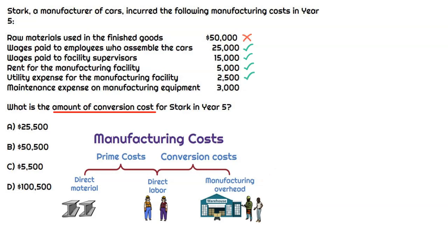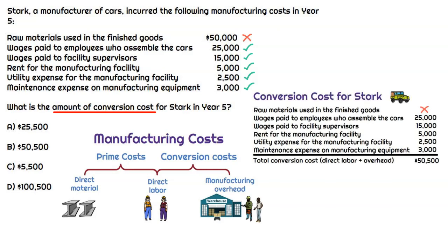The last cost is maintenance expense on the manufacturing equipment. We certainly have to incur maintenance expense to manufacture products, but it can't be directly related to a cost object, so it's not a direct material cost. It's an indirect cost and part of manufacturing overhead, making it a conversion cost. The only item excluded from conversion costs is raw materials ($50,000). Summing everything else gets us to the correct answer of $50,500, which represents the conversion cost for Stark.